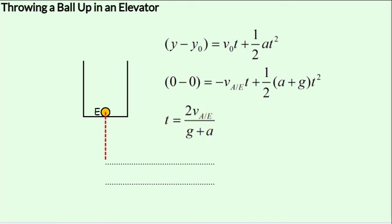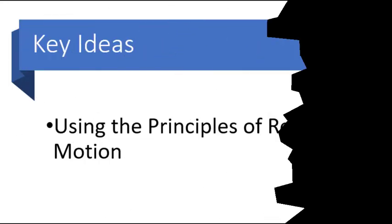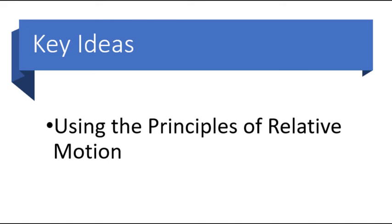Also think of the way A will see B. A would assume itself to be at rest, and A will think that B is initially moving away with the speed of V_B with respect to A, but an acceleration of g plus a pulls it back towards A. In summary, the time of flight of a ball thrown upwards in an accelerating elevator can be solved using the concept of relative motion. The relative initial and final displacements are zero. We obtain the relative velocity and acceleration of the ball with respect to the floor of the elevator and substitute these into the second equation of motion to obtain the time of flight.